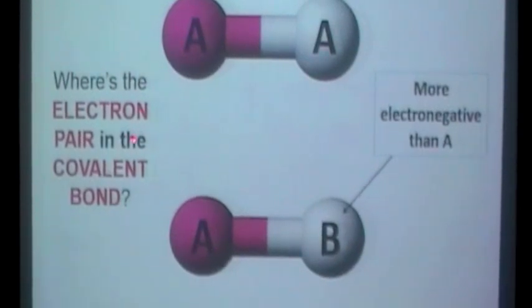I'll just give you a second to think about it. So where would the electron pair be in this molecule? Well because these are the same atom they've got the same electronegativity value, of course they would be exactly in the middle.